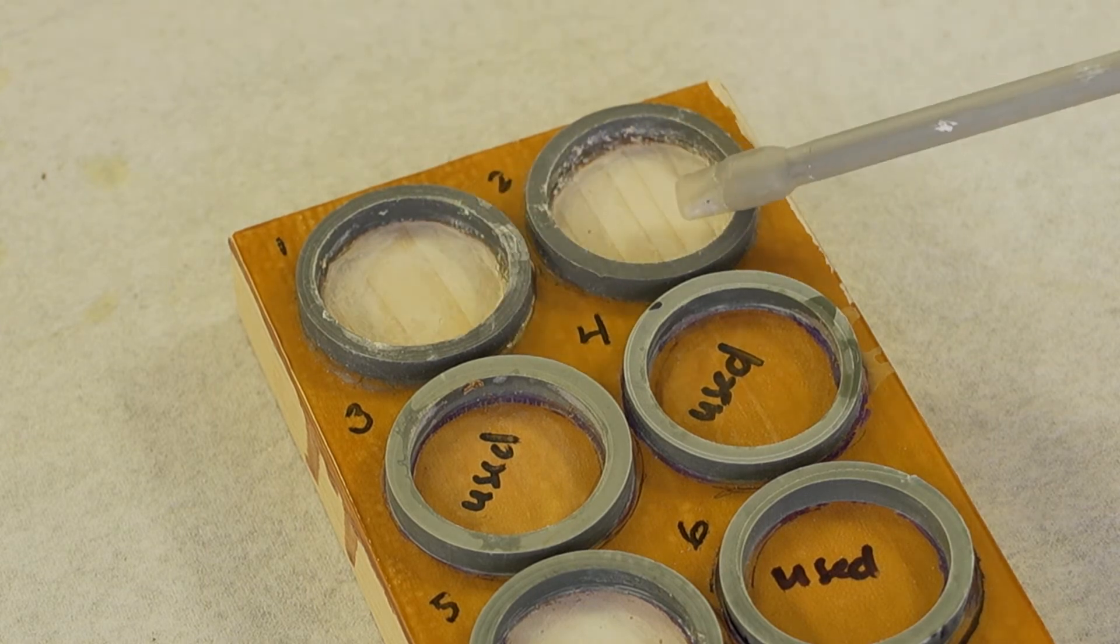And each of these rings is a separate test for a different paint stripping product. So here within this ring, we tested a methylene chloride-based paint stripper. And here within this ring, we tested one of the UMass Lowell developed formulations. And as you can see, they were both very effective at getting the varnish and the primer layer off and exposing the wood substrate.